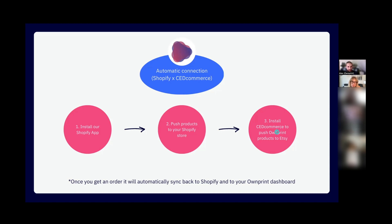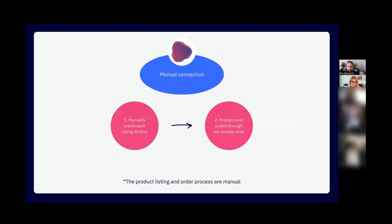The automatic connection is straightforward. First, you need a Shopify store and you install our Shopify app. Then you push products from Outprint to your Shopify store, and then push products from Shopify to Etsy using the CED Commerce app. CED Commerce connects Shopify with Etsy. When you get an order on Etsy containing an Outprint product, CED Commerce syncs it back to Shopify, which automatically syncs back to Outprint. We definitely recommend this option because it gives you more time to focus on growth activities — finding winning products, designs, or niches.